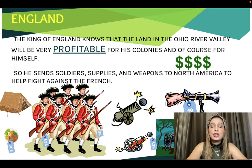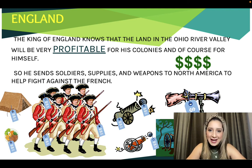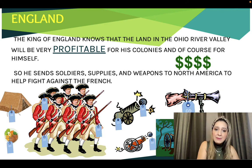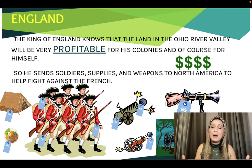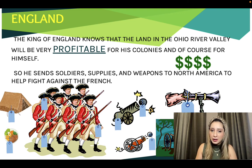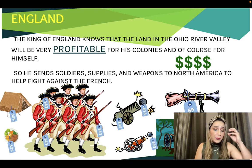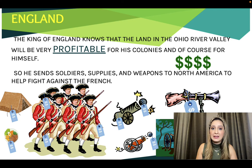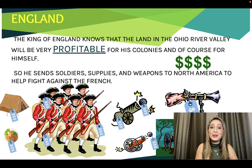England decided to send weapons and supplies to the 13 colonies, including soldiers, because the King knew that the Ohio River Valley was very profitable. If his colonies made money, he made money — remember mercantilism. So he sent soldiers, supplies, and weapons to North America to help fight against France. All of those things being sent over cost money — ammunition, cannons, guns, uniforms, shoes, food — all of that has a price tag. England is the one spending all that money to defend the 13 colonies against France.